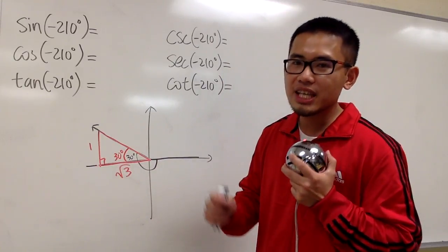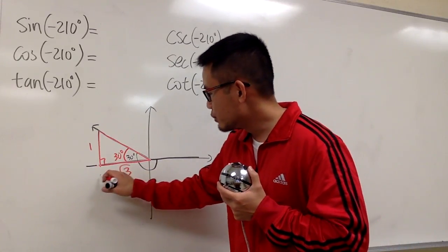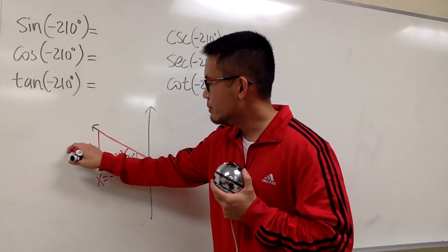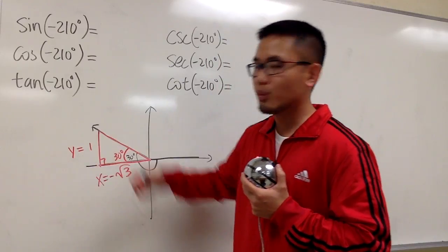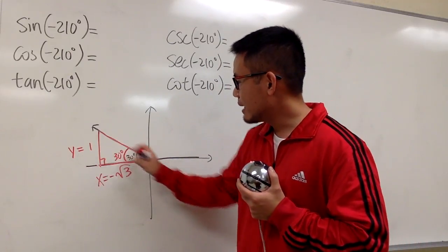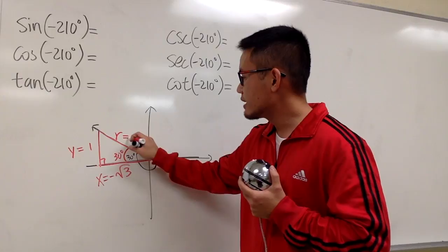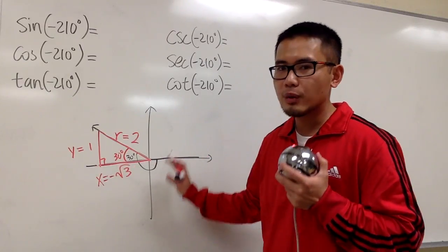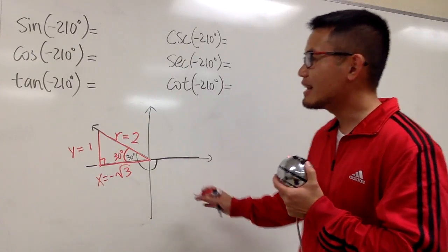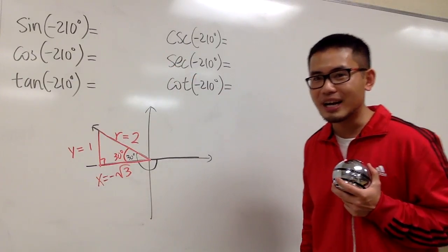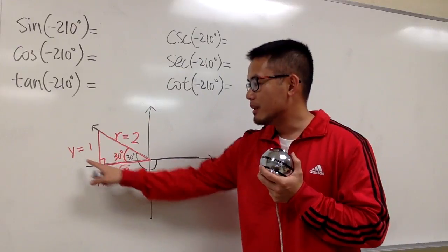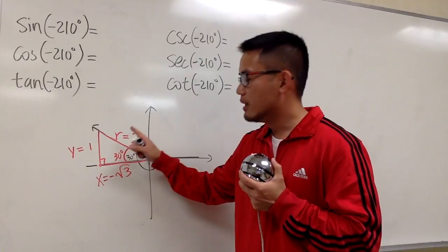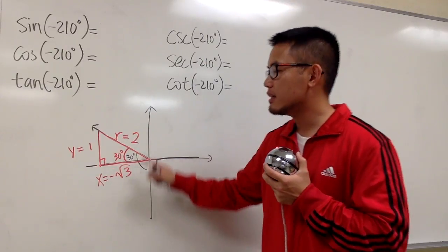The square root of 3 is to the left, so it has a negative x value. Be sure you write this as x equals negative square root of 3. The 1 was good because y is equal to positive 1. And for the hypotenuse, which is the r, in this case is 2. And the r is always positive. So this is the picture that we are going to come up with. In this case, x is negative square root of 3, y is equal to positive 1, and r, which is always positive, is 2.